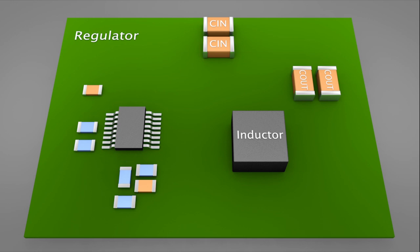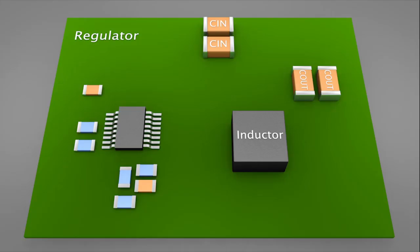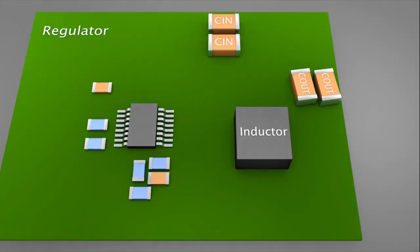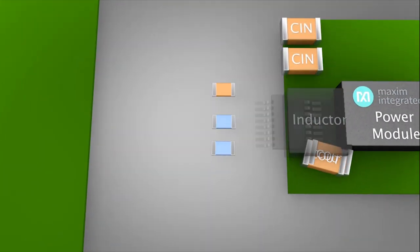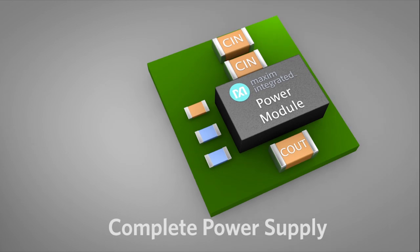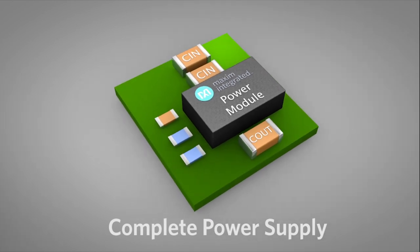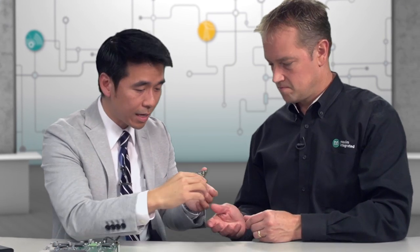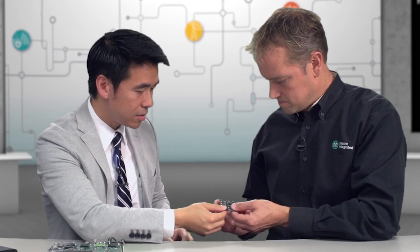But with these power modules, they're as easy as you can get with a power supply solution. Because they integrate everything that's necessary to form that supply. And all you need in the end is an input capacitor, output capacitor, and maybe two resistors to set the output voltage. And to show you, I actually have an actual EV kit that shows exactly that.